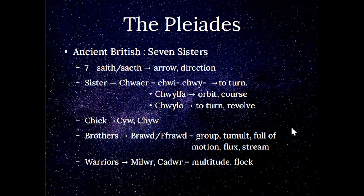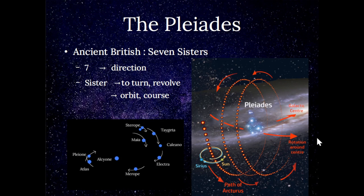Brothers would be 'brawd' or 'frawd' — a group, tumult, full of motion, flux, or stream. Warriors we've had before: 'milwyr' and 'cadwyr,' a multitude or a flock. Our Welsh language as the living remnant of ancient British explains all of the ancient mythology about the Seven Sisters.